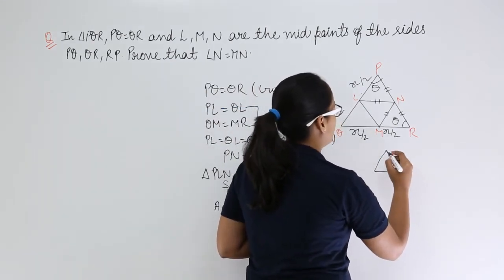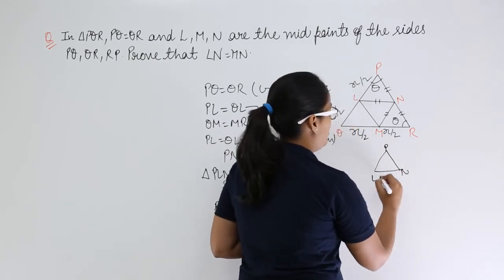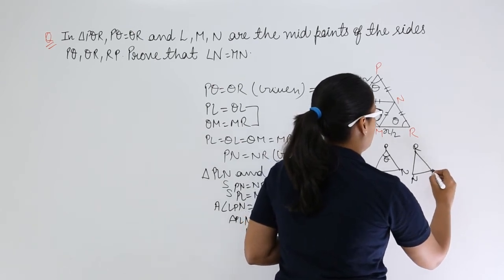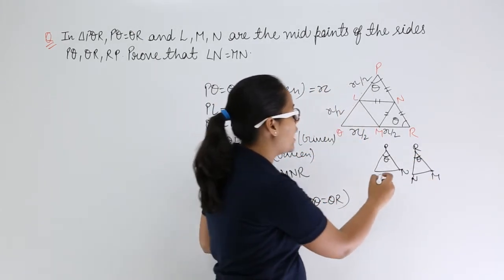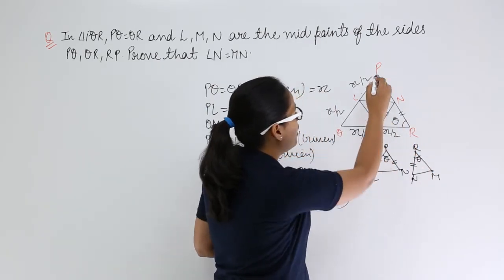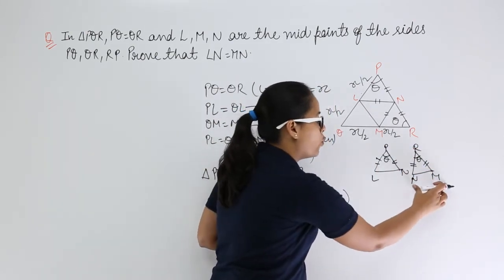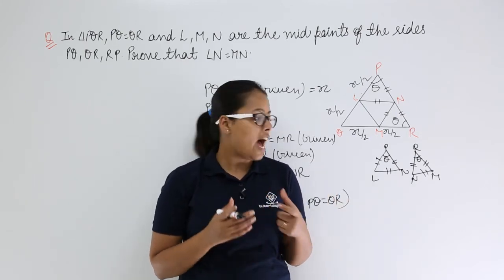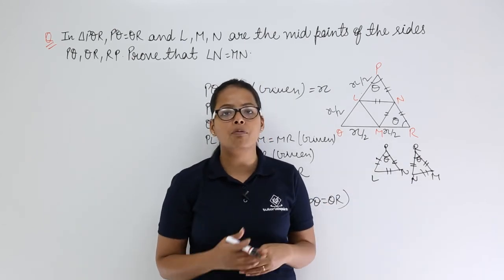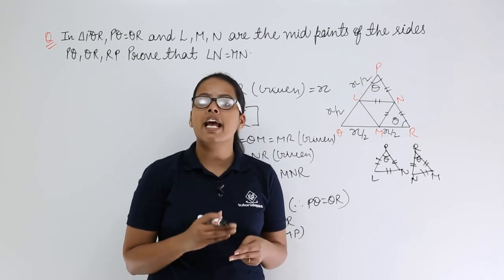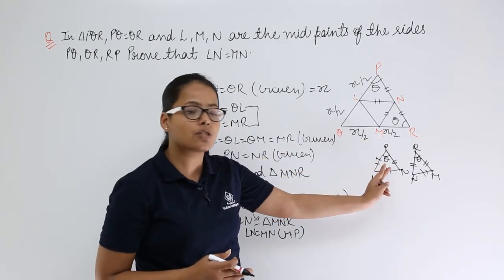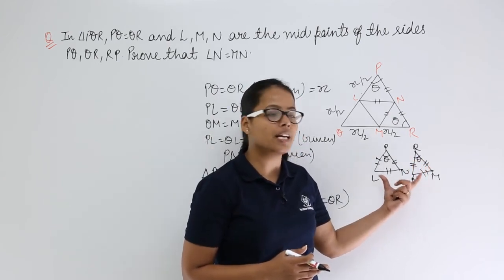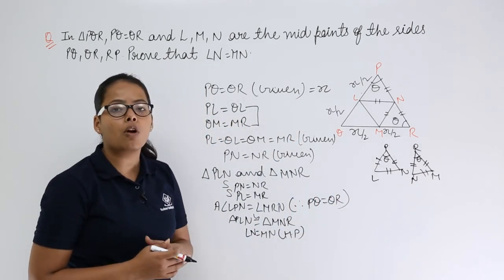To illustrate: draw triangle PNL with angle theta at P, and triangle RNM with angle theta at R. You know PN equals NR, and PL equals MR. When you put one triangle over the other, their third side must be the same because congruent triangles must have the same dimensions. Their third side automatically becomes equal by the SAS rule — Side Angle Side. The included angle between the two sides of this triangle equals the included angle of the other, satisfying the SAS rule, so the third side becomes equal.